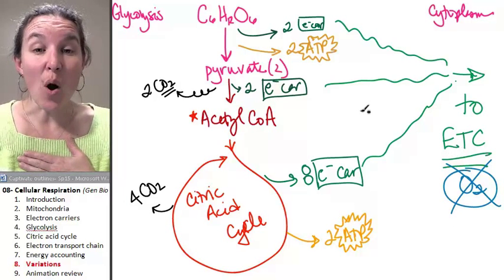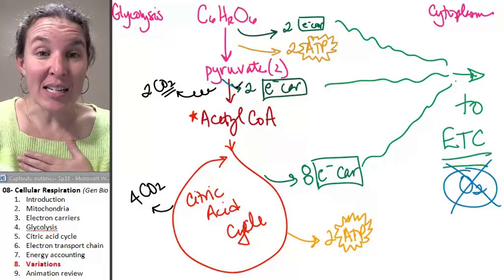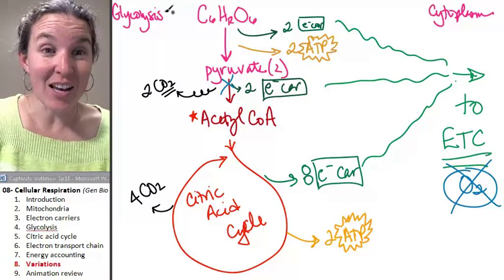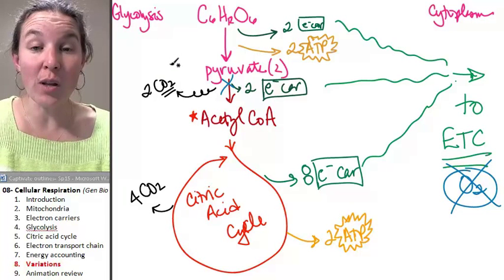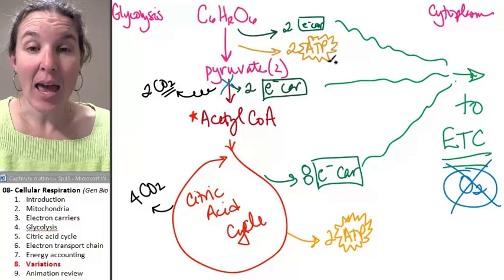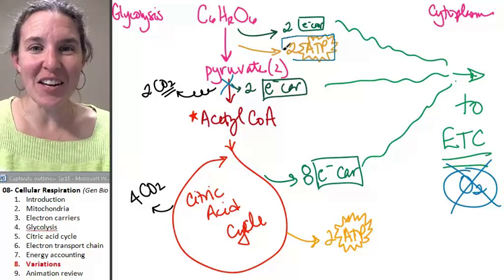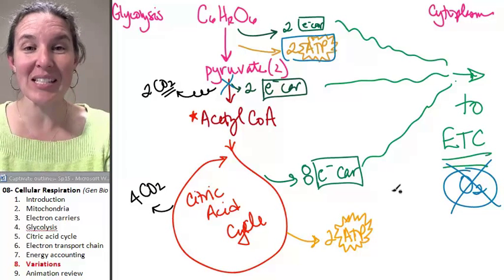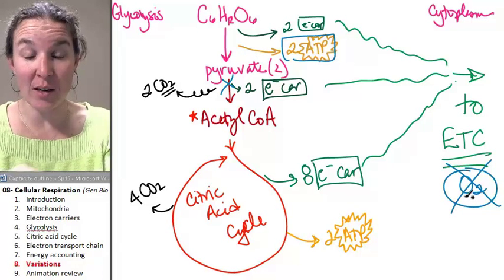It backs up all the way to here. And in fact, you can go through glycolysis without oxygen. You can go through glycolysis and you can end up with pyruvate, which means how many ATPs did you get? That's it. You get two ATPs if you don't have oxygen as your final electron acceptor.